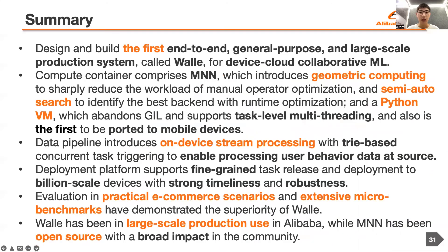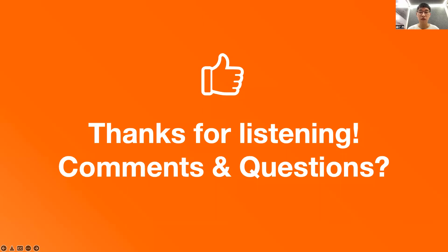Finally, let's conclude the talk. In this work, we design and build the first end-to-end, general-purpose, and large-scale production system called Wally for device cloud collaborative machine learning. The compute container in Wally comprises MN, which introduces geometric computing and semi-auto search, and a Python virtual machine which abandons GIL and supports task-level multithreading. The data pipeline introduces on-device stream processing with tree-based concurrent task triggering to enable processing user behavior data at source. The deployment platform supports fine-grained task release and deployment to billion-scale devices with strong timeliness and robustness. Evaluation in practical e-commerce scenarios and extensive micro-benchmarks have demonstrated the superiority of Wally. Wally has been in large-scale production use in Alibaba, while MN has been open-sourced with broad impact in the community.